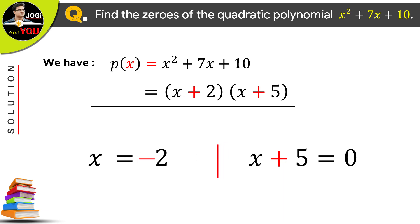Plus 2 becomes negative while going from left to right. And secondly, positive 5 also becomes negative. So, now, we have two values of x.